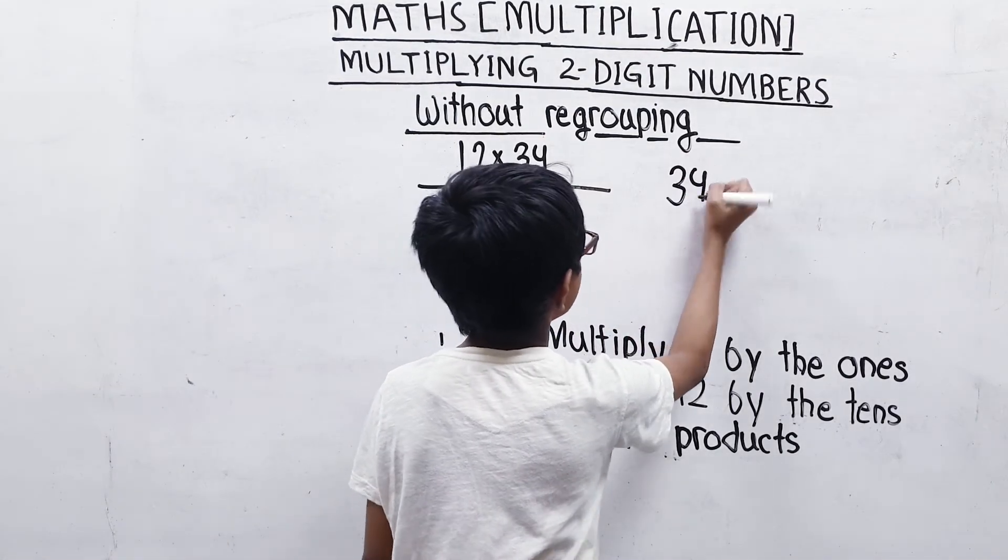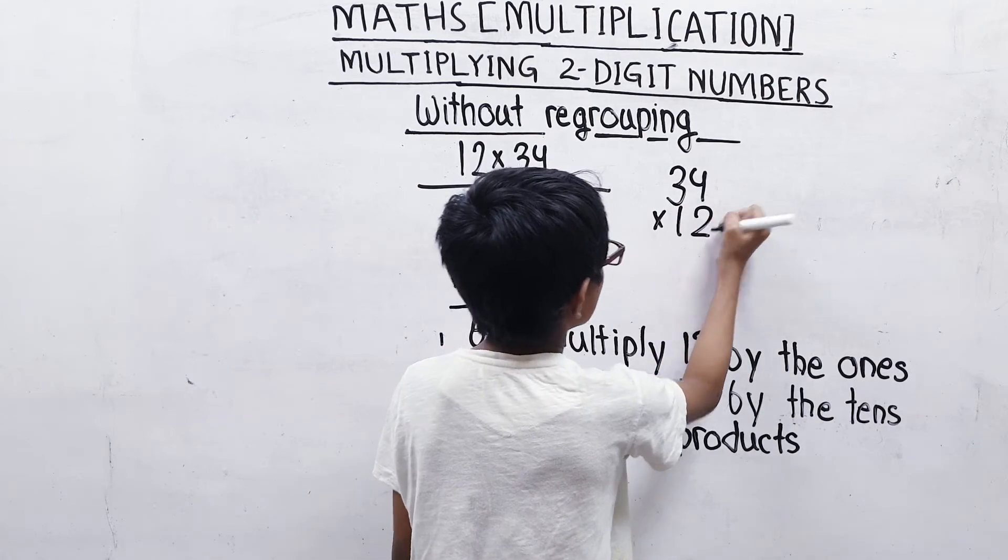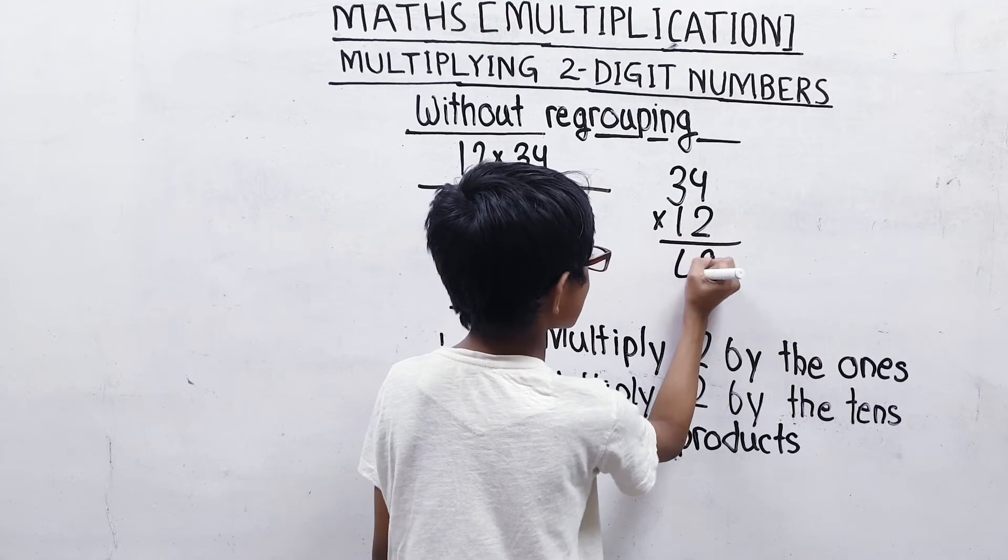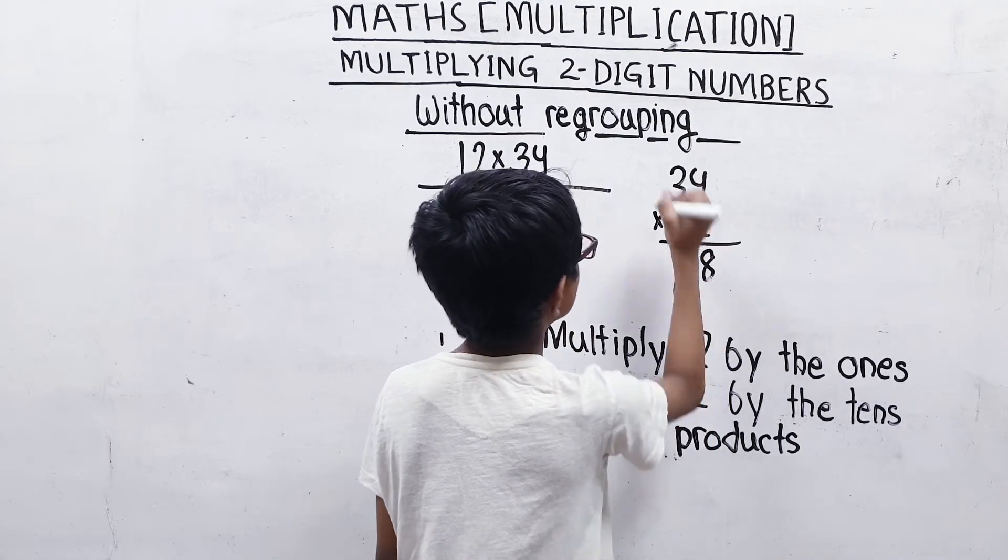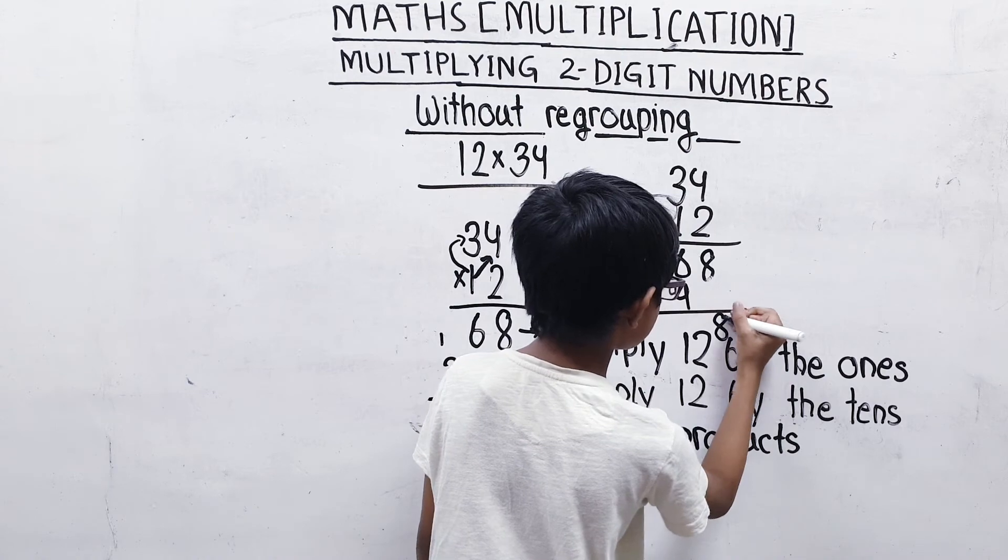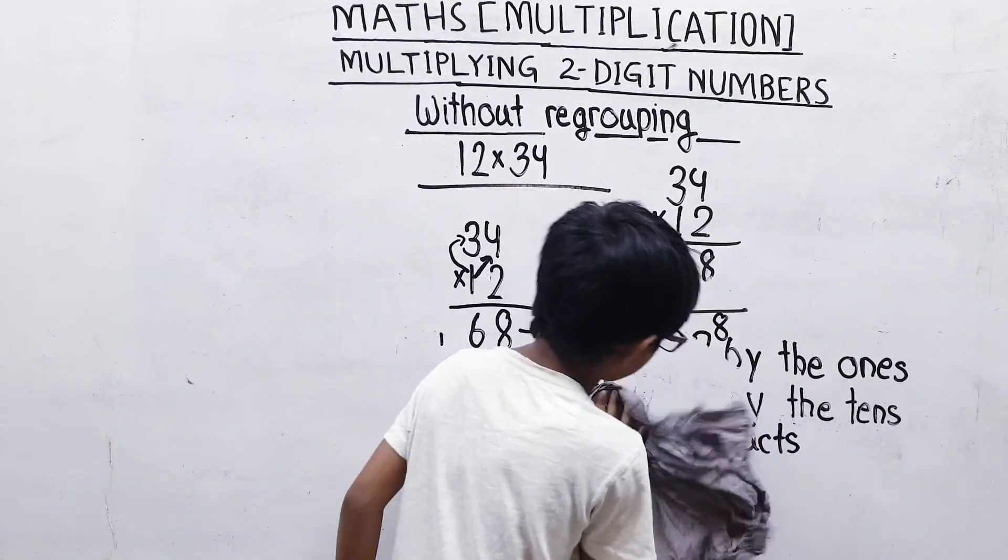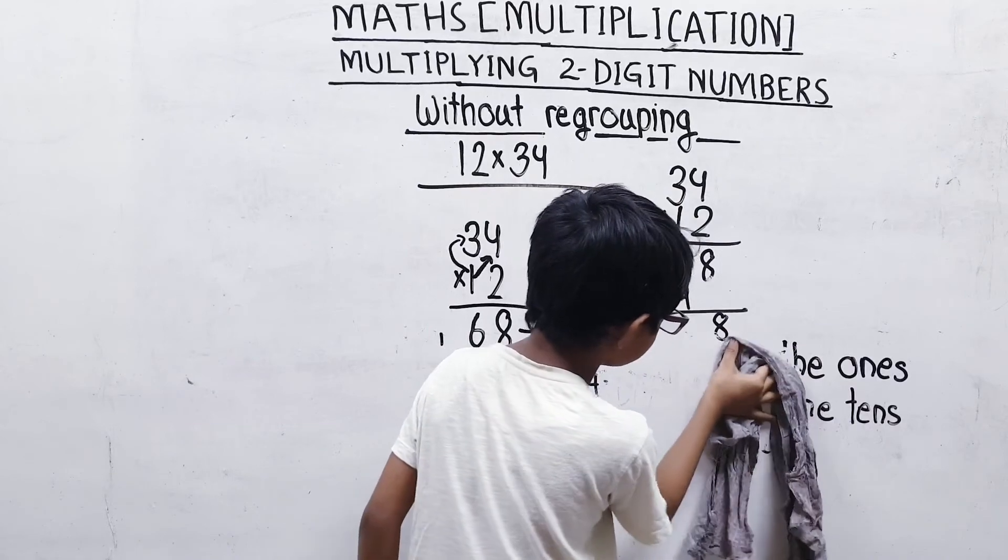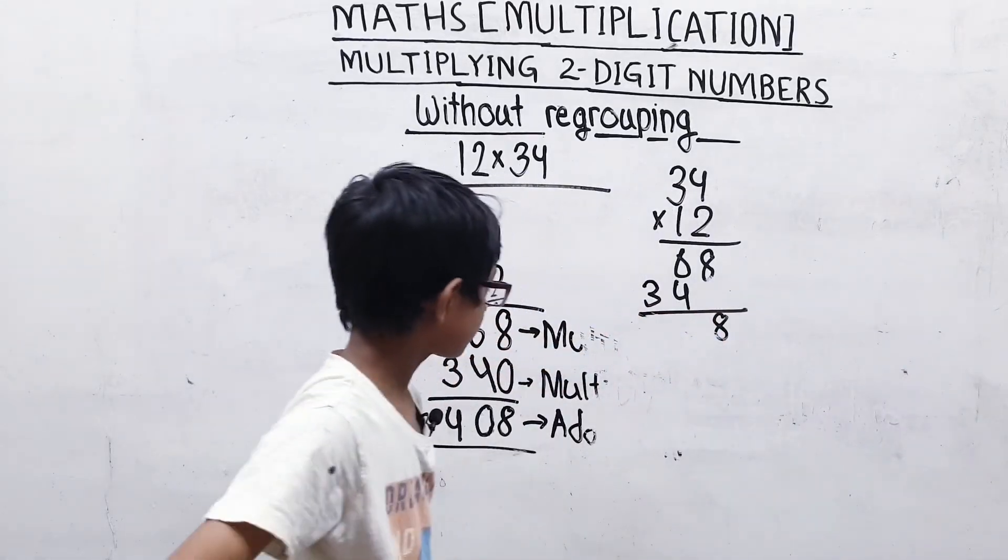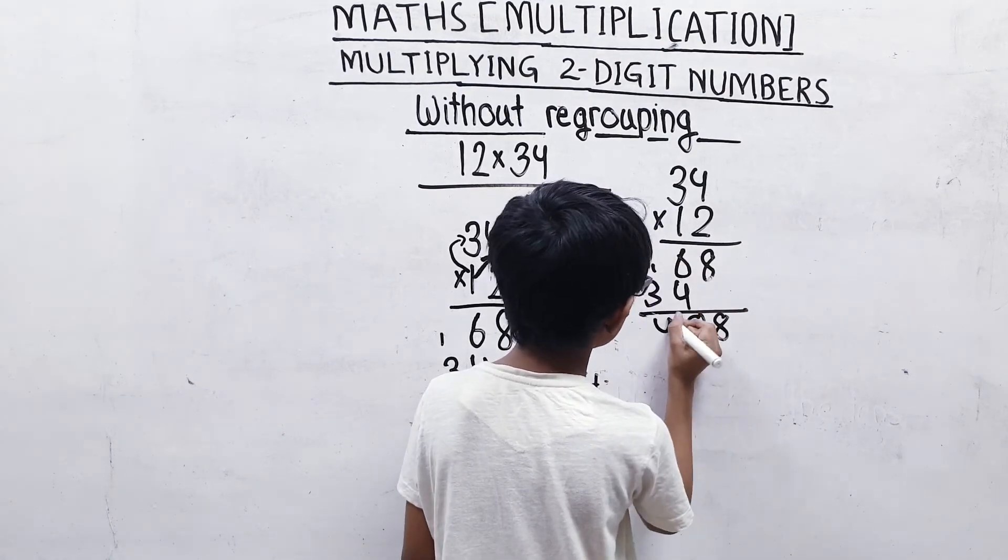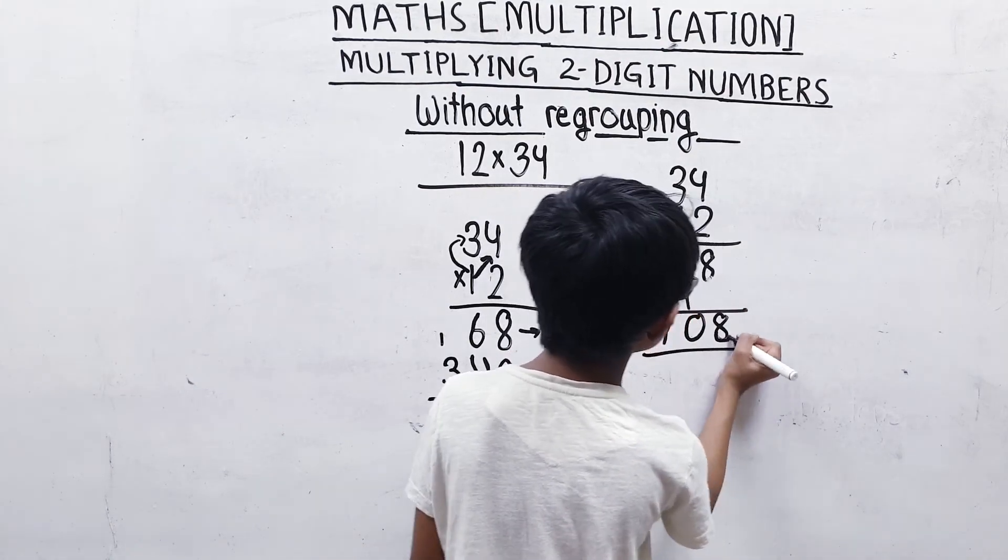34 multiply by 12. First, 4 times 2 is 8. Then 3 times 2 is 6. Then 4 times 1 is 4. Then 3 times 1 is 3. We are getting the answer is 408.